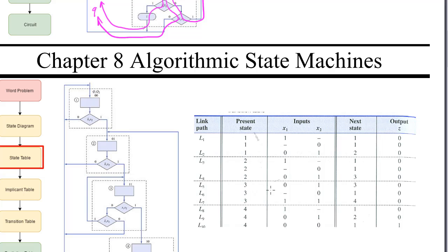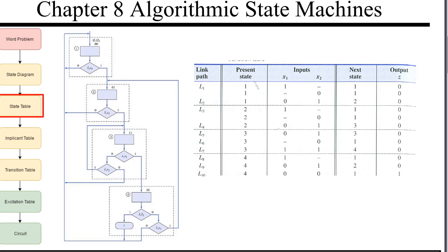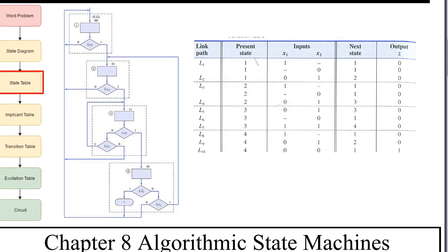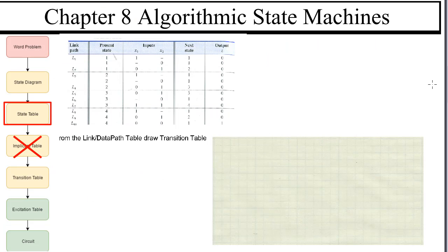Ours doesn't look the same here as the book's. They describe link paths eight and nine a little bit differently. Looks like their link path eight is this one, their nine is this one, and ten is the one that actually has an output. So we're just going to go with theirs. Our next step is to build the transition table. The book has this strange notation up here: one, don't-care, don't-care, zero, all for the same link path.